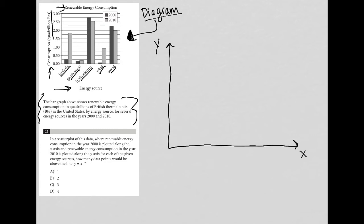It says in a scatter plot of this data where renewable energy consumption for the year 2000 is plotted along the x-axis. So this is 2000. And renewable energy consumption in the year 2010 is plotted along the y-axis. So this is 2010.